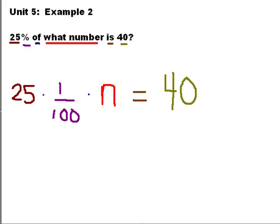So we're solving this equation 25 times 1 over 100 times n equals 40. Again, the first thing we're going to do here is take our numbers and combine them together.